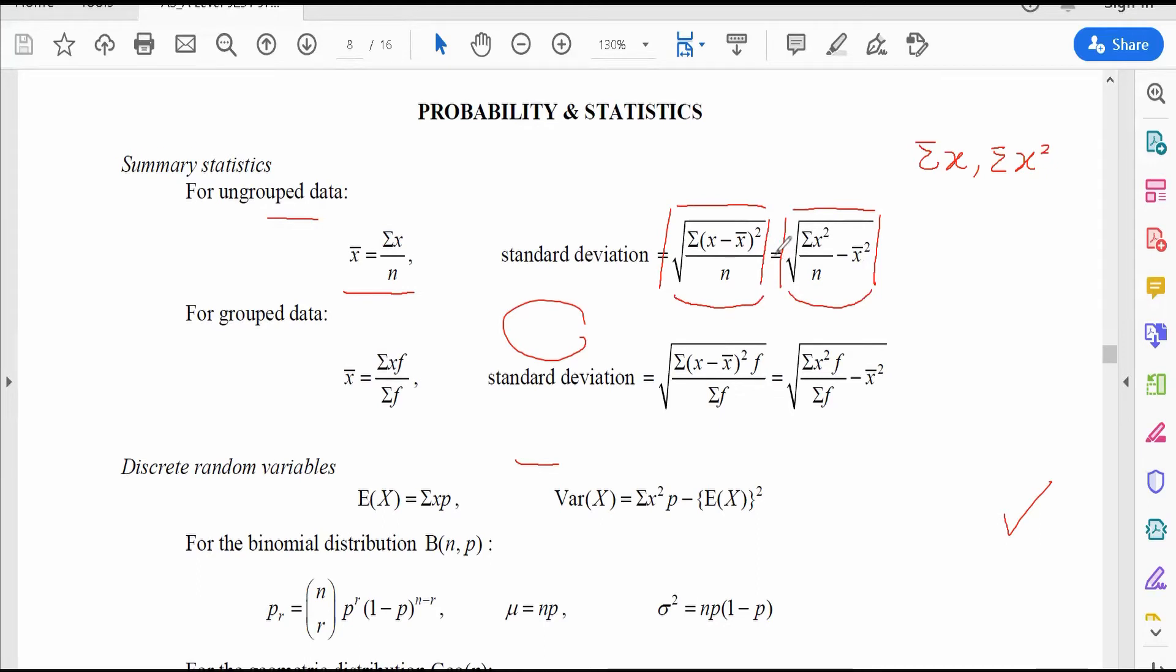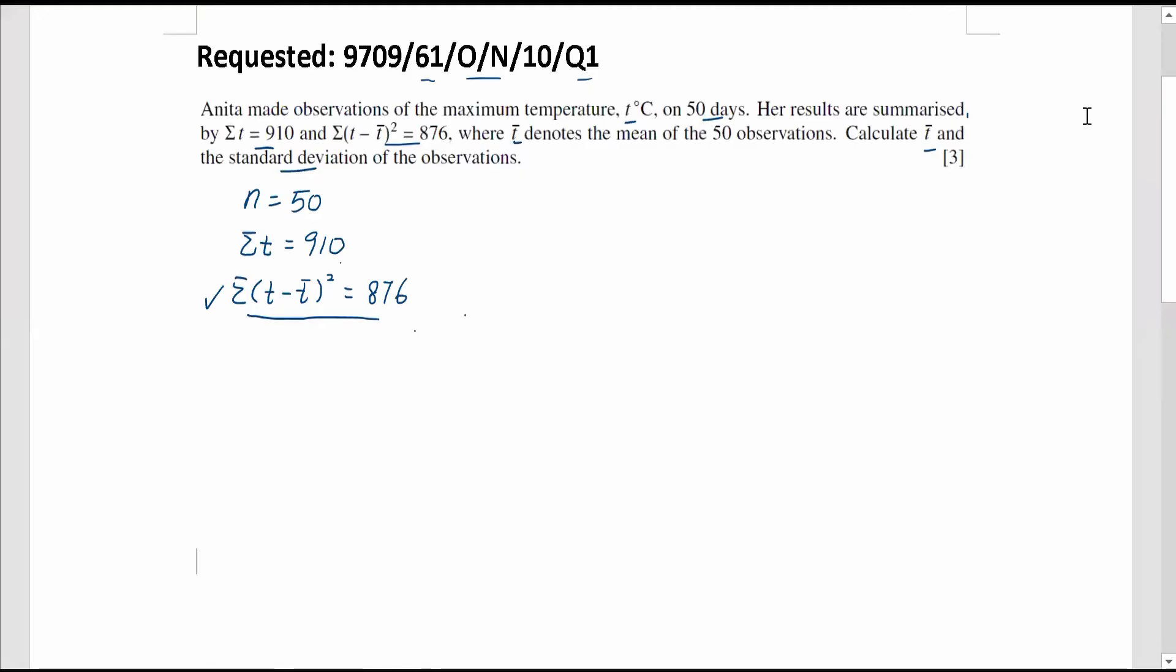Now, we go back to the question. Let me write down the formula at the side first. For me, in general, the formula is given as x bar equals to summation of x divided by n. For the standard deviations, we have this formula: sum of x minus x bar square divided by n. Or we have the second one: sum of x square over n minus the x bar square.